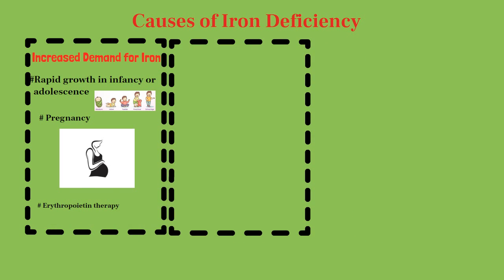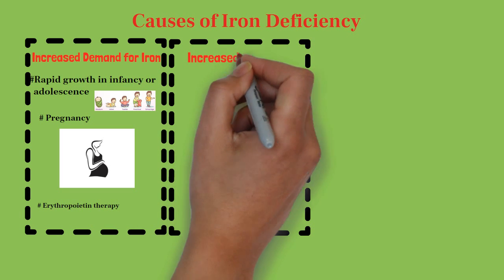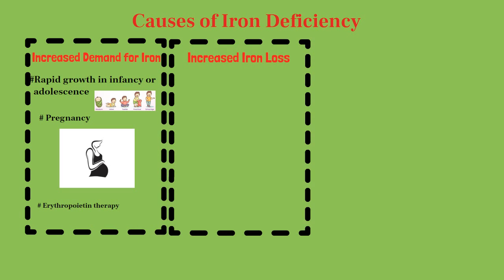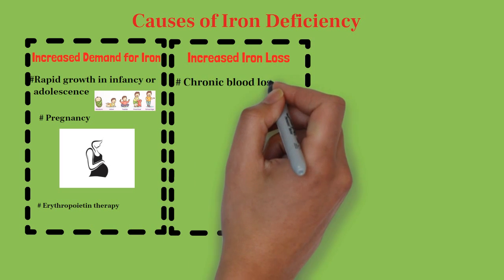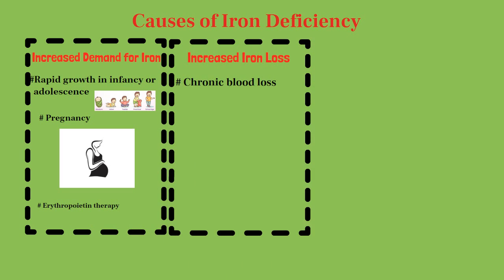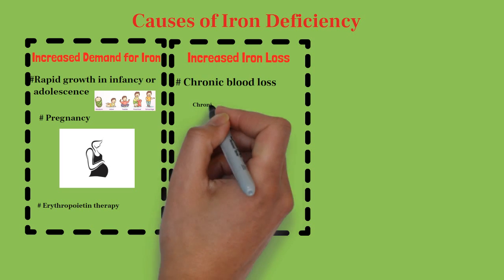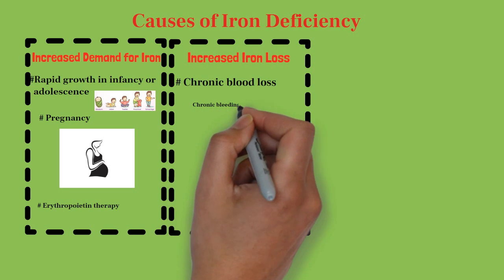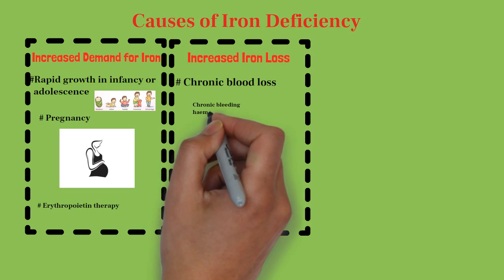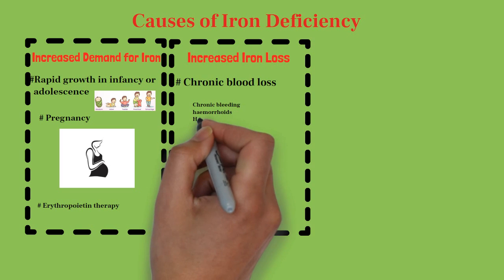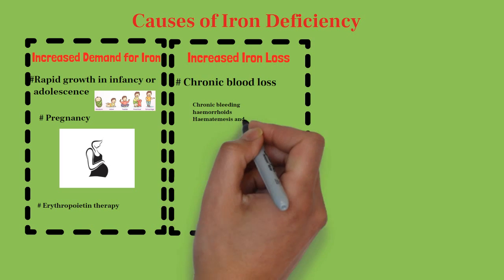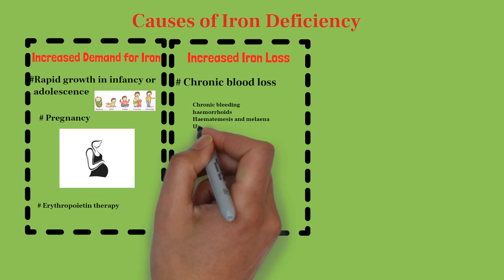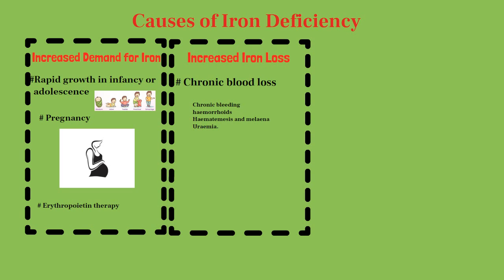The major cause of iron deficiency anemia is loss of iron by many ways. First is chronic blood loss — chronic bleeding via hemorrhoids, hematuria, peptic ulcer, and other chronic GI bleeds can cause iron deficiency anemia. One should know that in post-menopausal women and older adult males, chronic blood loss is the main cause of iron deficiency anemia, and usually these patients present in a late stage.